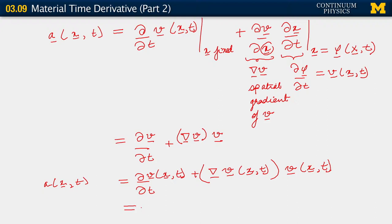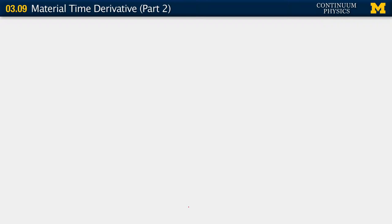And this is simply the same as the Lagrangian description of the acceleration, observing that there is a difference in terms of how we're parametrizing these objects. To round off our understanding of this, let me write it using coordinate notation.